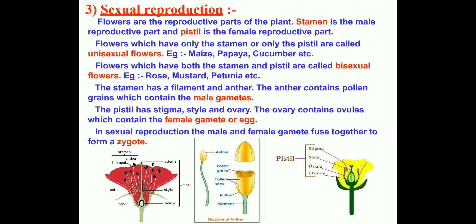Flowers which have only the stamen or only the pistil are called unisexual flowers. Examples of unisexual flowers are maize, papaya, cucumber, etc.